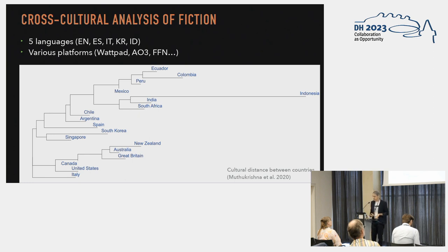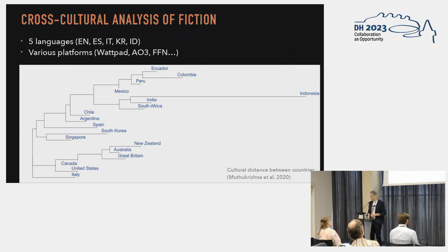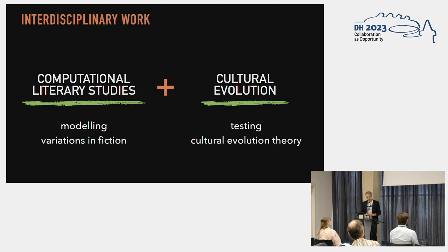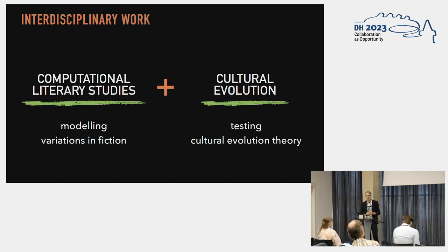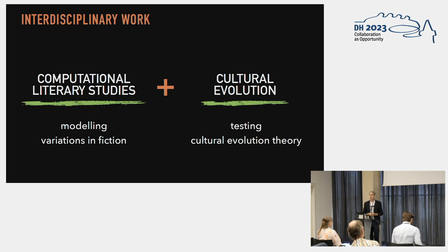We also have different data sources, all online fiction platforms. So we have fanfiction.net, but also Wattpad — mostly amateur writers publishing online. It's very much interdisciplinary work, combining modeling of text through computational studies, but the testing of hypotheses is very much related to a clearly defined and specific set of hypotheses put forth by cultural evolution theory. This is interesting because these hypotheses have been either proved or disproved in other domains, like technology or visual arts, but there's not much work about fiction.